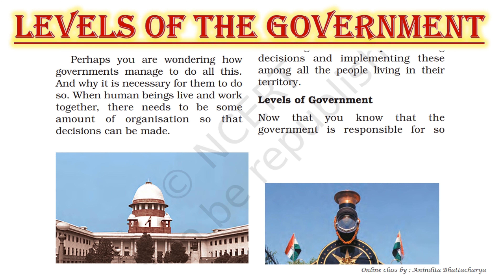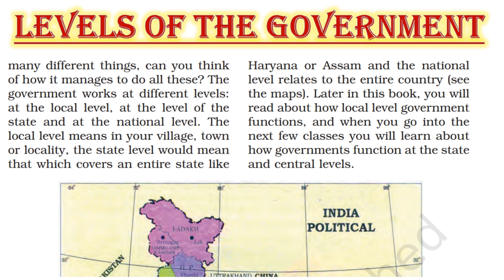The government in our country functions at three levels. At the national level is the Central Government, which deals with matters of public welfare and national importance such as defense and security. At the state level is the State Government, which deals with issues of importance to the entire state. At the lowest level is the Local Government, which deals with the problems faced by people living in a village or a town.